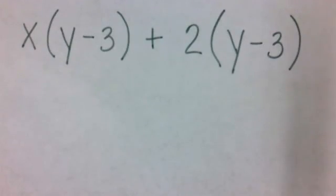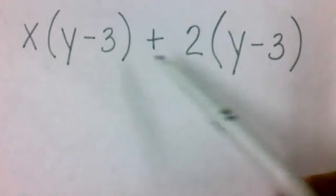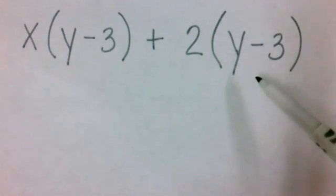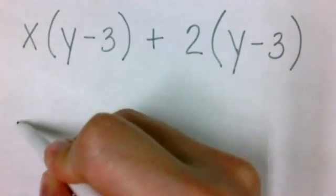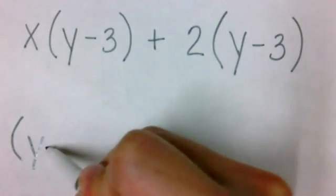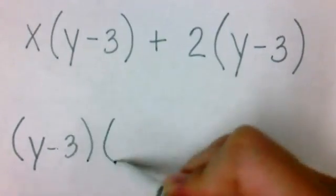For this problem, we'll be factoring by the greatest common factor. Notice that each of the terms has the (y-3) in parentheses in common. So we're going to put that in front of another parenthesis.